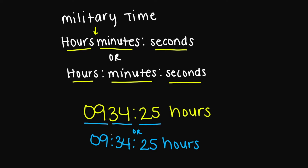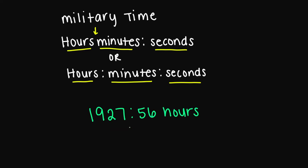Or you can write this military time with the colon included. Let's look at this example. My hours is 19, my minutes is 27, and my seconds is going to be 56. Or you may rewrite it with the colon — so it's going to be 19:27:56 hours.